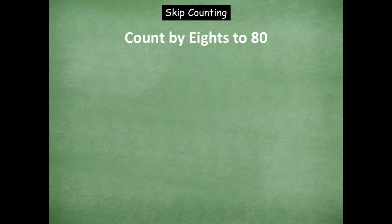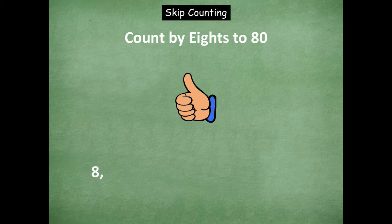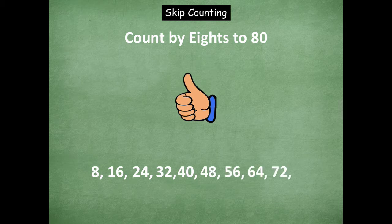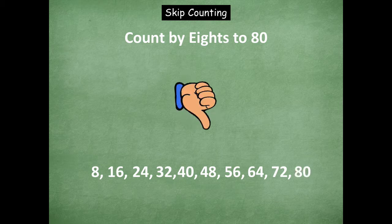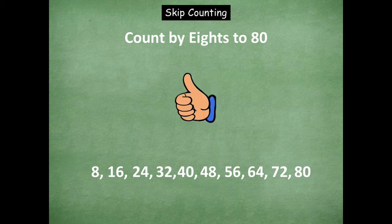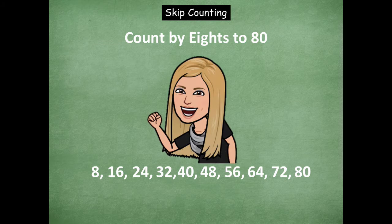Let's jump into our eights — counting by eights all the way to eighty. I know we can do it! Counting up: eight, sixteen, twenty-four, thirty-two, forty, forty-eight, fifty-six, sixty-four, seventy-two, eighty. Let's count down: seventy-two, sixty-four, fifty-six, forty-eight, forty, thirty-two. Stop. Counting up: forty, forty-eight, fifty-six, sixty-four, seventy-two, eighty. Rock on, friends!